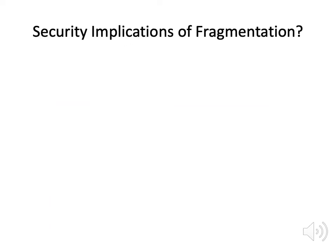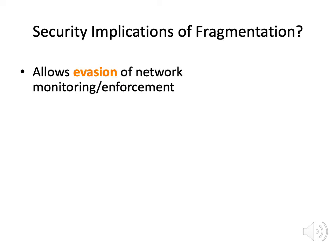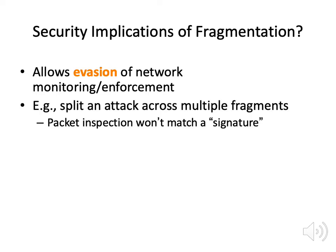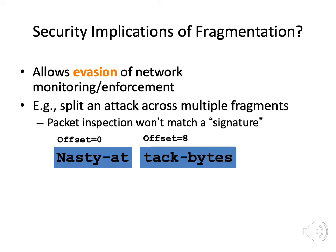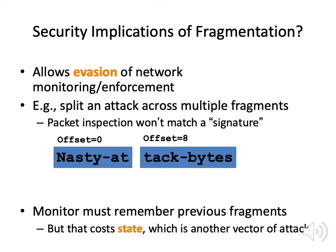Now let's look at the security implications. Fragmentation can allow for evasion of network monitoring and enforcement, because we can split a packet across multiple fragments. If a packet inspection looks for a signature — for example, shell code — the packets won't match because they only contain a fragment of it. If you just look at any single IP packet it looks fine; you have to reassemble it. This means that the monitor has to remember previous fragments and do its own reassembly, making it more expensive, complicated, and vulnerable to memory exhaustion attacks.